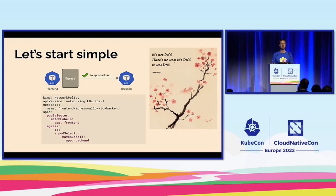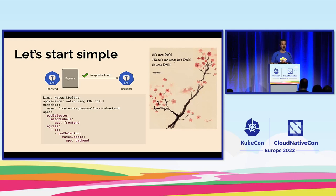A lot of application teams will inject a network policy and may not understand that they also need to allow traffic to KubeDNS — they need DNS for their service.